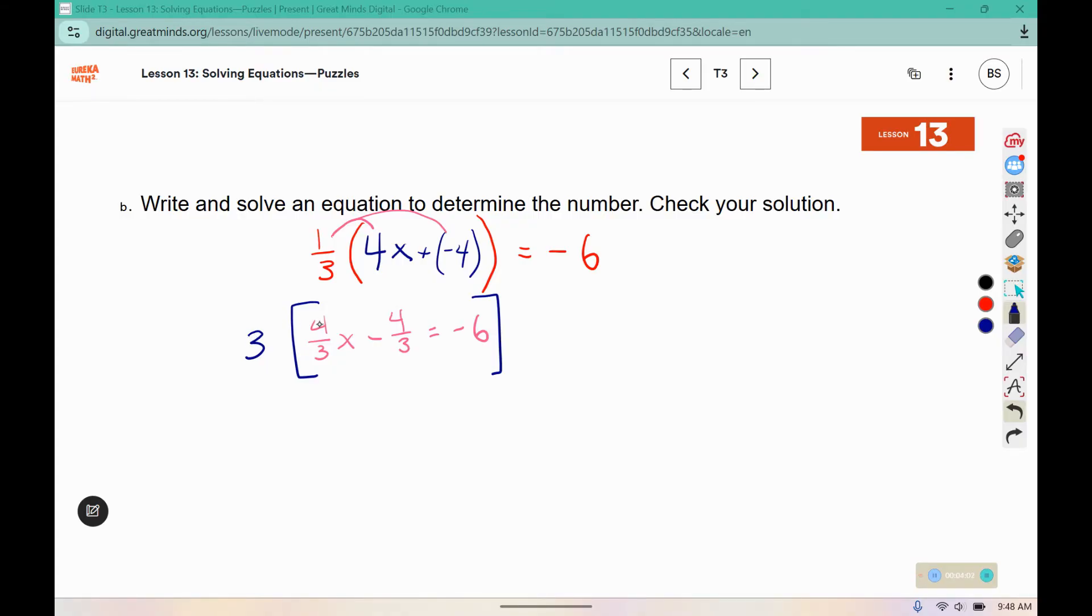So 3 times 4 is 12, 1 times 3 is 3, so 12 divided by 3, or 12 thirds, is the same as 4, so we're going to write down 4x. Then I have 3 times negative 4 would be negative 12, and that invisible 1 times 3 would be 3, but negative 12 divided by 3 is negative 4. And then we have 3 times negative 6 is negative 18. Now all of our terms are made out of whole numbers, so it just makes the problem a little bit simpler.